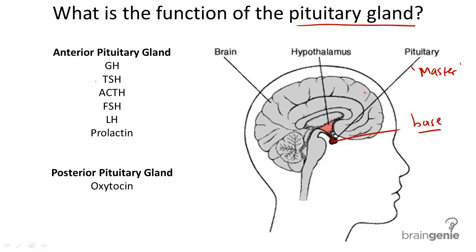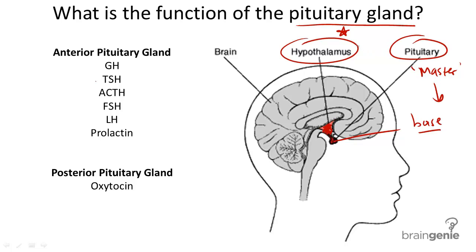The pituitary gland, however, is controlled by the hypothalamus, which is why this is highlighted here as well. For every hormone released by the pituitary gland, there is a corresponding hormone in the hypothalamus that actually triggers its release.